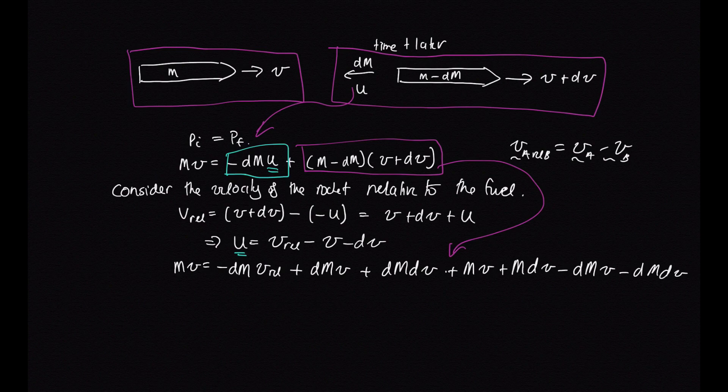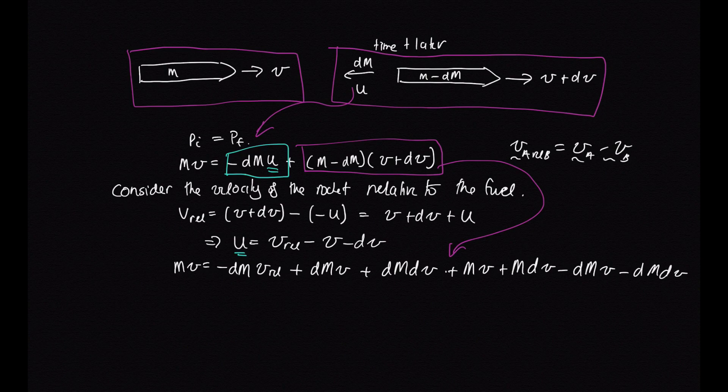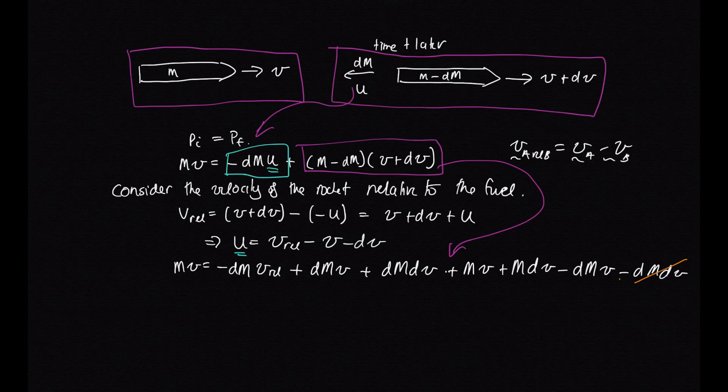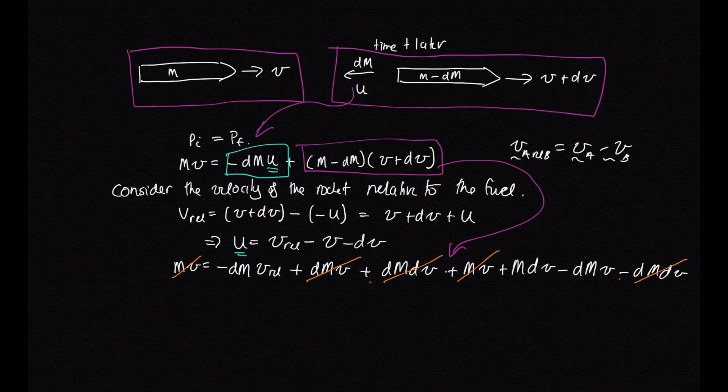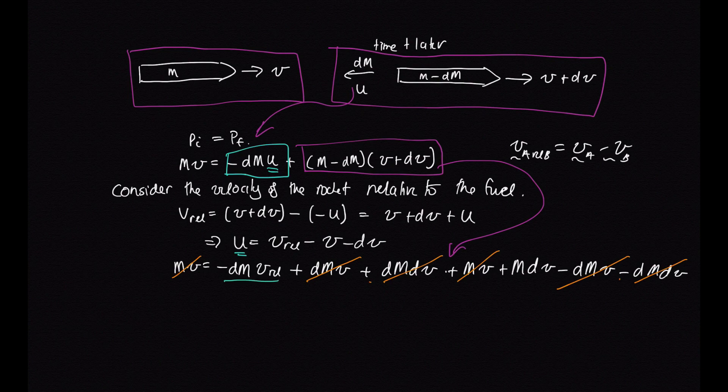So we've got plus mv plus mdv minus dm v minus dm dv. Now we have so many terms and it's so messy, but a lot of these will cancel out. So let's cancel the terms. We've got dm dv with a negative and here it is with a positive. So that disappears. Here's mv on the left hand side and here it is again on the right hand side. Now we've got a dm v here and a minus dm v here. So at the end of all that cancellation we're left with this term and this term.